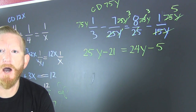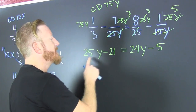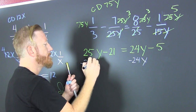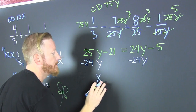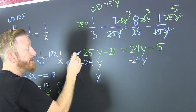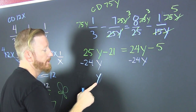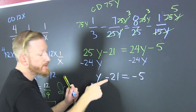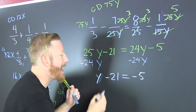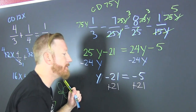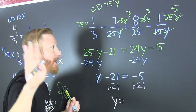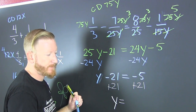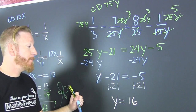Now I've got y's on both sides, and I want them on one side — probably the left. Subtract 24y. If I had 25 and somebody took 24, I'd have one y. Minus that 21, that's going to be minus 5. To get rid of that 21, add 21 to both sides. So then y turns out to be — wait for it — 16. Positive 16.